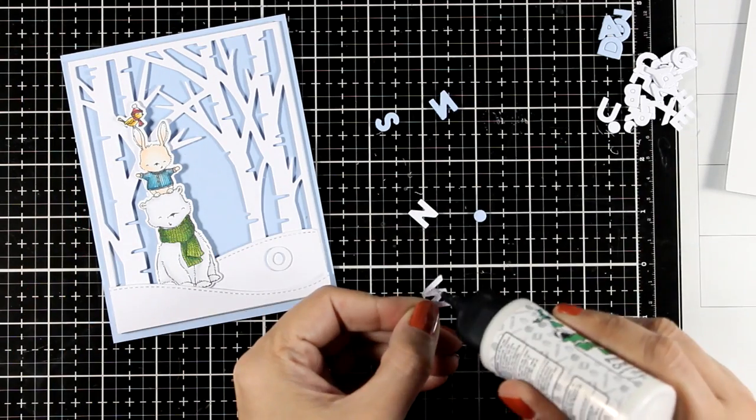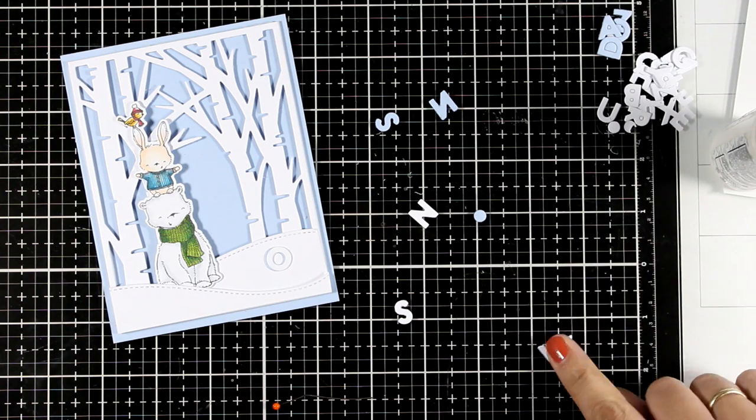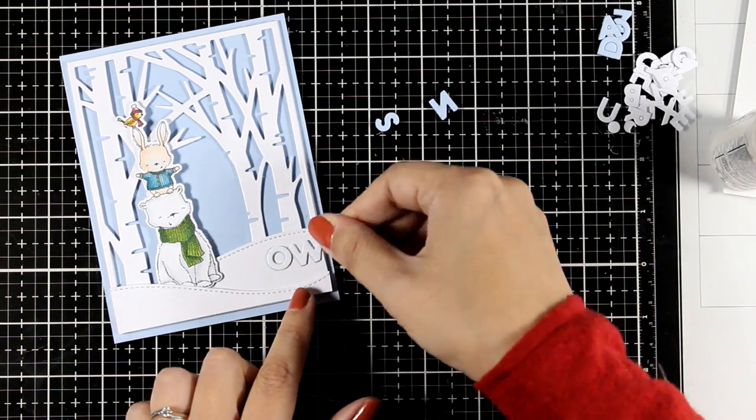Giving it a little bit of a shadow. I'm just offsetting the two letters slightly. Using white glue makes this step really easy, since you can slide those two letters until you are happy with the placement.